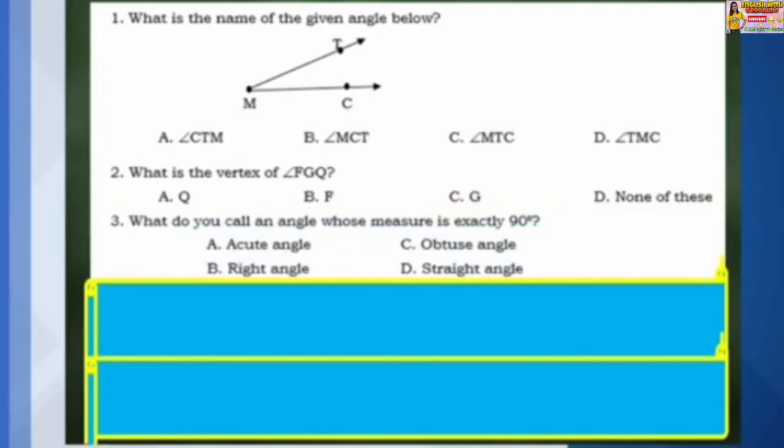Number 3: What do you call an angle whose measure is exactly 90 degrees? A: Acute Angle. B: Right Angle. C: Obtuse Angle. D: Straight Angle.